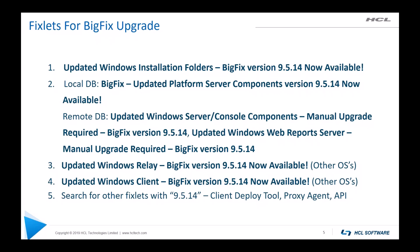After you upgrade the relays, you can then upgrade your clients. Number four is the fixlet for upgrading the clients on Windows operating systems. You may see other fixlets to upgrade the clients on other operating systems in your environment. Lastly, once you're done with the upgrade in this order, we always recommend searching the BigFix version under fixlets and tasks in the console — in this case, 9514 — just to see if there are other fixlets and tasks available for upgrades for things like the client deploy tool, proxy agent, and so forth.